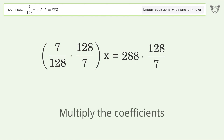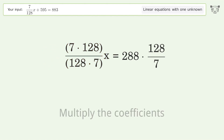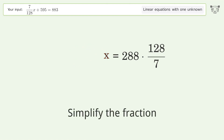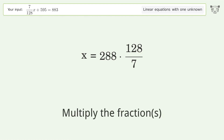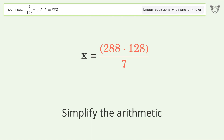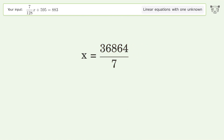Multiply the coefficients. Simplify the fraction. Multiply the fractions. Simplify the arithmetic. And so the final result is x equals 36864 over 7.